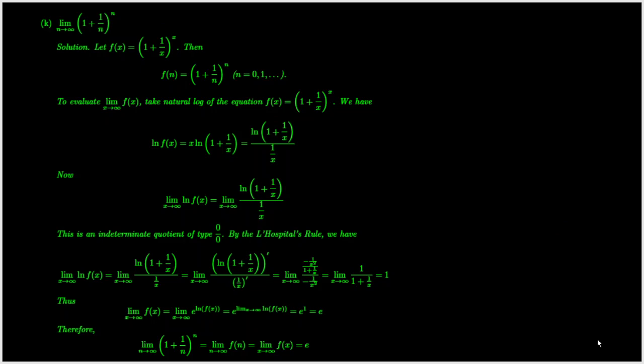We now work on question 5k. Let f of x be as shown. Then the values of the function f at all whole numbers form the given sequence. Using techniques we've learned, as x approaches infinity, the limit of the function is evaluated as shown on the screen. This means that the function values are arbitrarily close to the limit when x values are sufficiently large. Therefore the limit of the sequence equals the limit of the function.